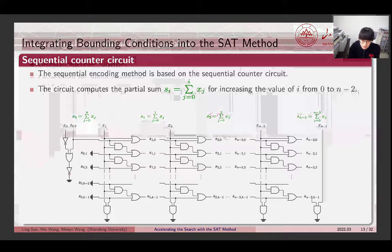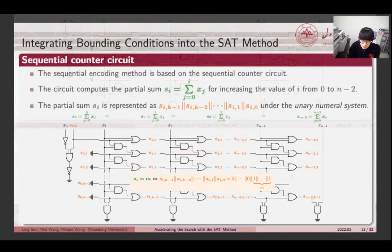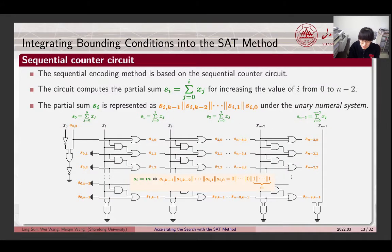To address this issue, we go back to the sequential encoding method. This method is based on the sequential counter circuit, and the circuit computes the partial sum for increasing the value of i from 0 to n-1. The partial sum, Si, is represented with k Boolean variables under the unary numeral system. In other words, Si equals m is equivalent to the last m Boolean variables equals 1, and the remaining variables equals 0.